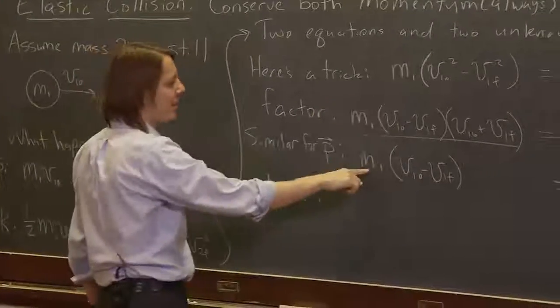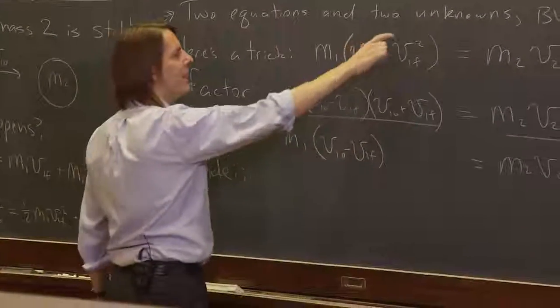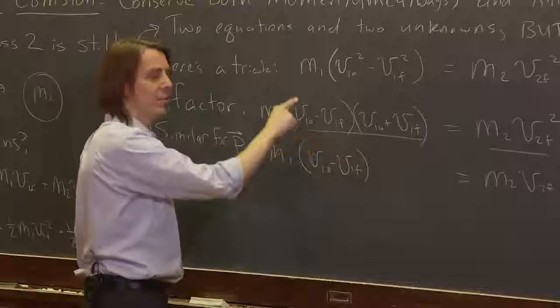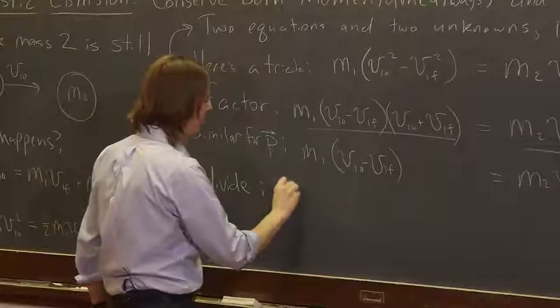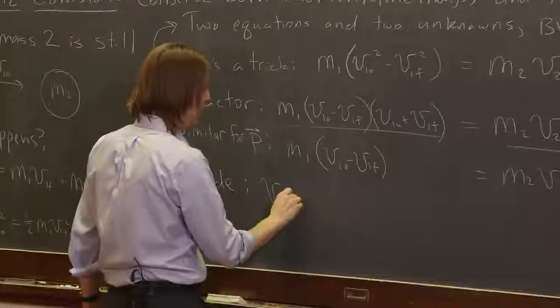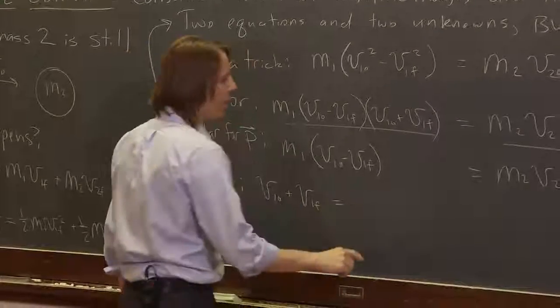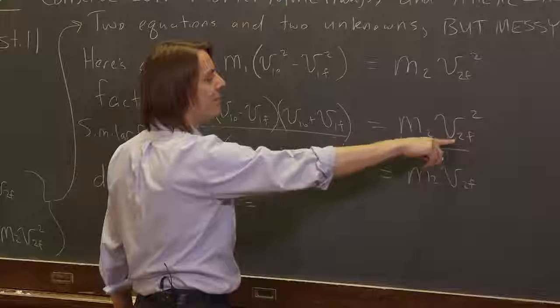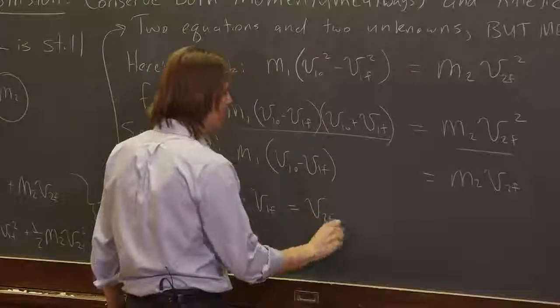So if we divide these, you can see the mass M1s cancel. And this part of the factorization of the difference two squares cancels. This is where we get rid of the squared part on the left. So all that cancels. And we just have V1O plus V1F. And then on the right, what do we have? The masses cancel and one of the V2Fs cancel. The squared ones cancel. So all you end up with is V2F.